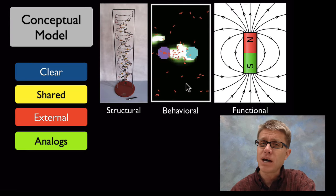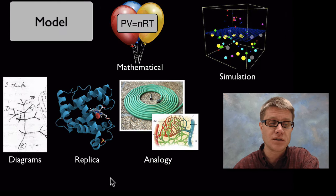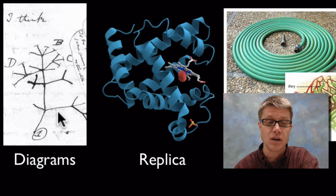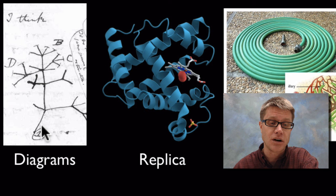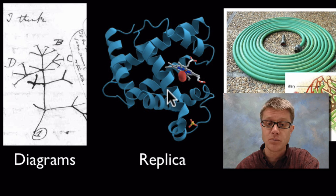We can manifest those analogs in a number of different ways. You could make a model that's simply a diagram — this was a diagram created by Charles Darwin when he was trying to explain how speciation occurs, drawing a branching diagram from a common ancestor. Or this could be a computer simulation of a protein — this is myoglobin.